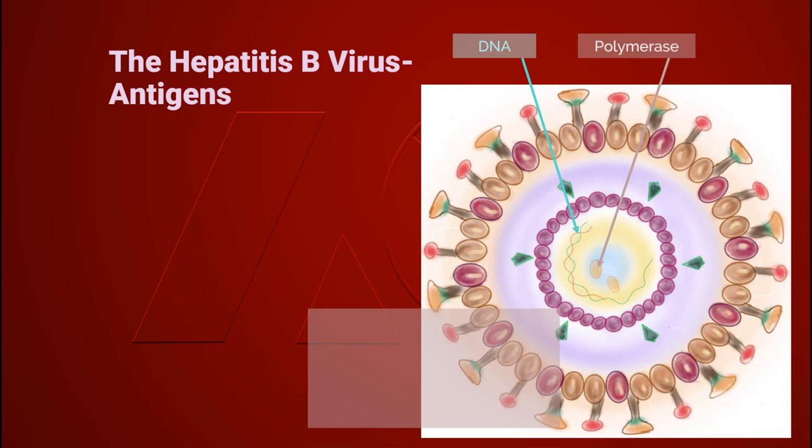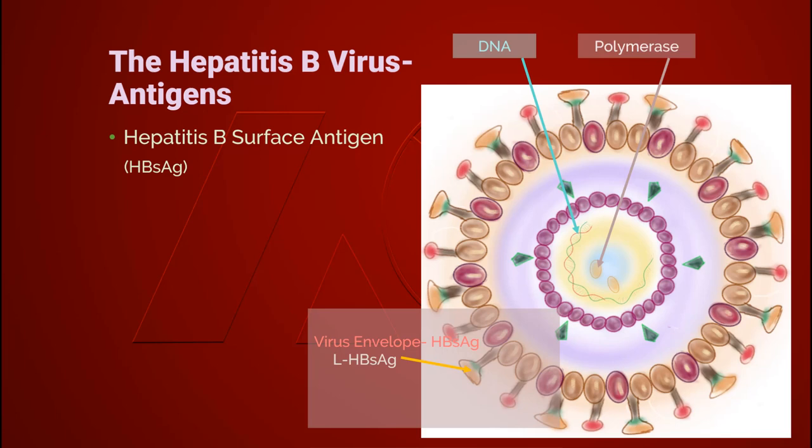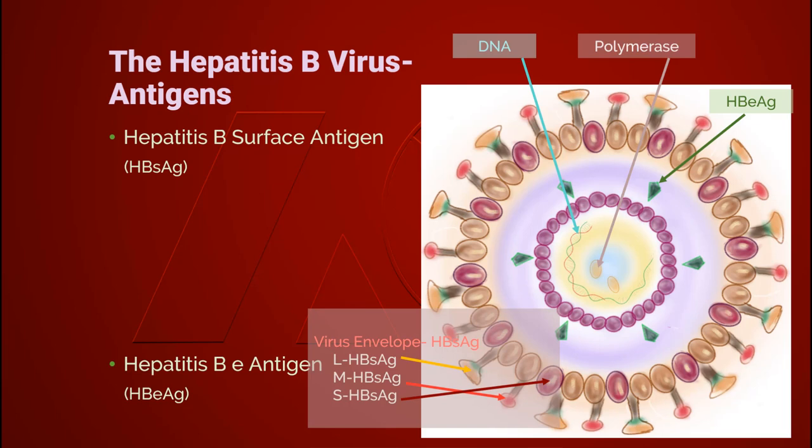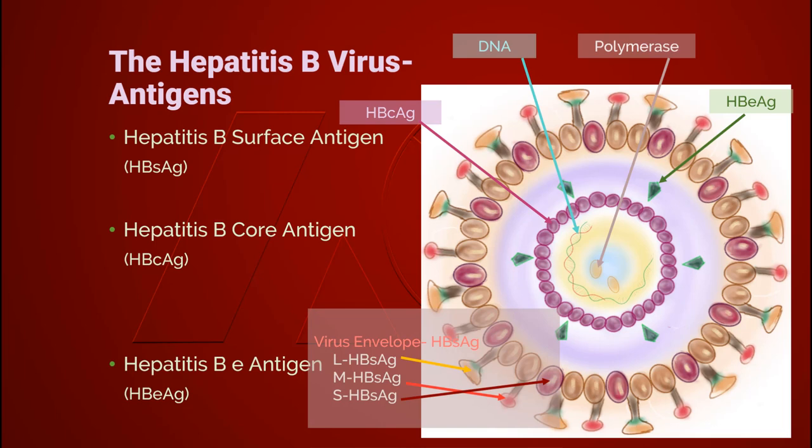Hepatitis B virus carries many different antigens to which our body responds at different stages of infection. The first antigen is surface antigen, including large, medium, and small hepatitis B surface antigen. E antigen is the secretory protein produced by the pre-core gene; it circulates in the host's bloodstream and is located between the capsid and lipid envelope in the virus. The last is core antigen, which is located in the capsid that surrounds the DNA.